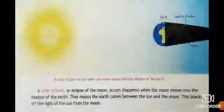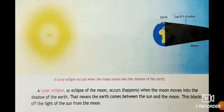You can see there is a solar eclipse when the shadow of the moon falls on the earth. Next we will see about the lunar eclipse.